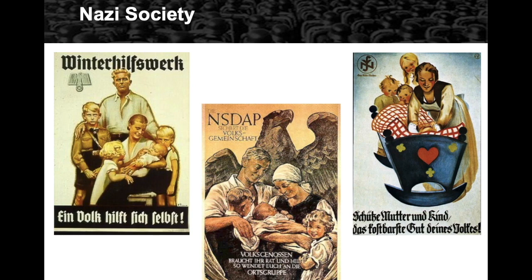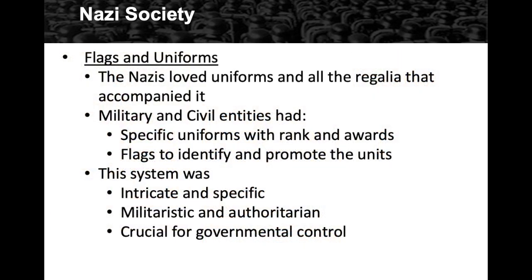This is how Hitler was able to sway millions of people to his side — through propaganda. Germans would look at these posters showing the smiling, ideal Nazi family and want to be part of this movement. On one poster is the League of German Mothers symbol, showing a loyal German mother in her apron putting a baby in a cradle, surrounded by other blonde Aryan children. This was the ideal, and every Nazi family would want to look like this and do their part.